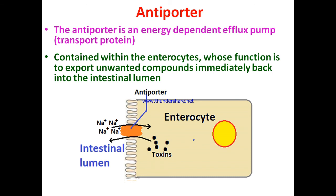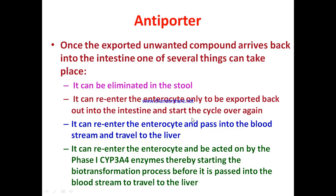The antiporter is an energy-dependent efflux pump — a transport protein contained within enterocytes lining the alimentary canal, whose function is to export unwanted compounds immediately back into the intestinal lumen. Certain toxic chemicals, while passing through the intestinal canal, enter enterocytes — the antiporter then sends them back into the intestinal lumen. As a result, they are not absorbed into the circulatory system and there is no need for biotransformation.